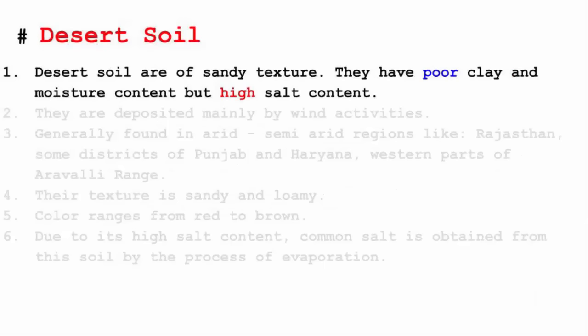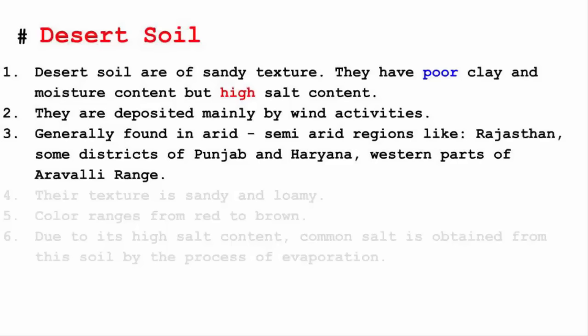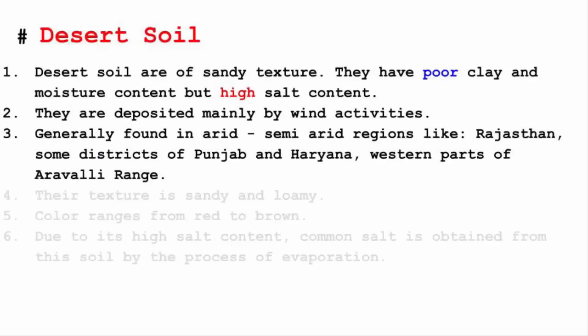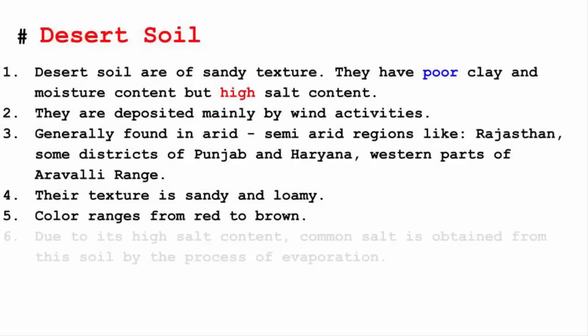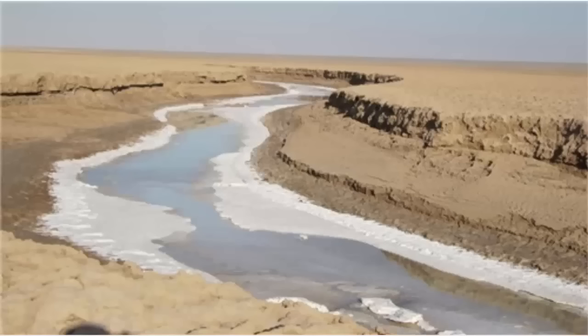Desert soil has a sandy texture due to the lack of clay and moisture content. Clay is a sticky substance that holds debris together — without moisture or clay, soil becomes very loose like sand. These soils are deposited mainly by wind activity, like sand dunes in a desert. They are generally found in arid and semi-arid regions like Rajasthan, some districts of Punjab and Haryana, and the western parts of the Aravali range. The texture is sandy and loamy, and the color ranges from red to brown. This soil is high in salt content, so common salt is obtained from it by the process of evaporation.